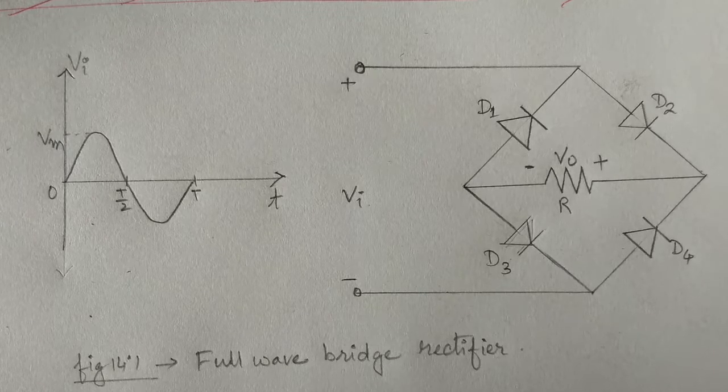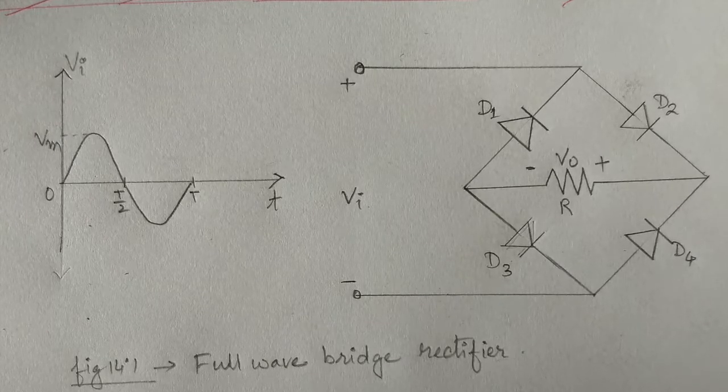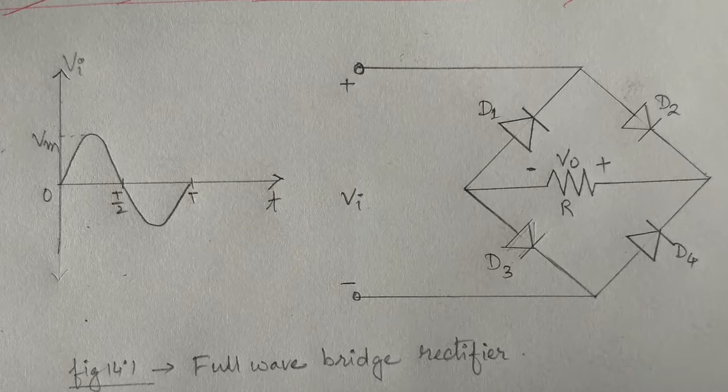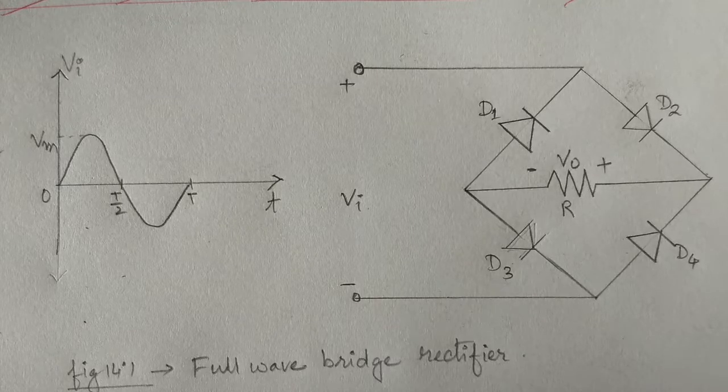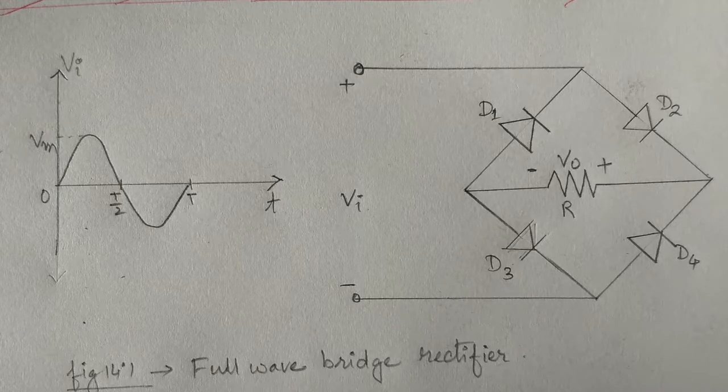We will consider the positive half cycle and negative half cycle, that is, for times 0 to T by 2, and T by 2 to T, separately.